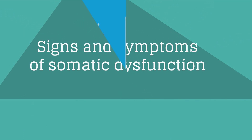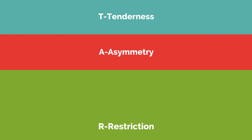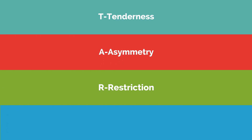The signs and symptoms of somatic dysfunction are defined with the acronym TART. The T stands for tenderness, the A is for asymmetry, R is for restriction, and T is for tissue texture changes.